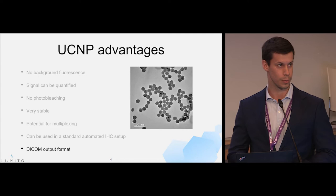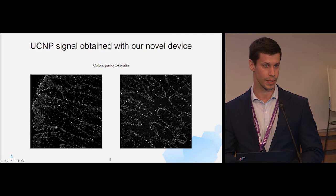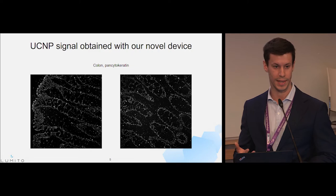Now I'd like to show you some images from the staining with UCMPs. Here is a colon sample stained with pancytokeratin. What I hope you can appreciate is that there is no background tissue, and we believe that it will be much easier for automated analysis since there is no background tissue here.